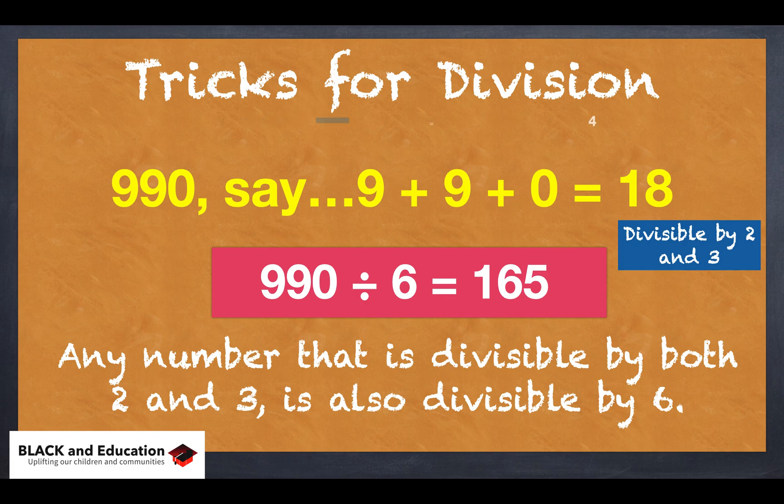So any number that's divisible by 2 and 3 is also divisible by 6. Take the number 24. I can see 24 is divisible by 2 because it ends in 4. And if I add up 2 plus 4, it equals 6. So I know it's divisible by both 2 and 3, which means it's also divisible by 6.